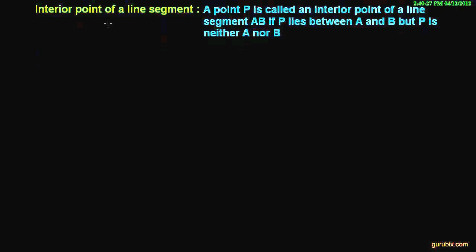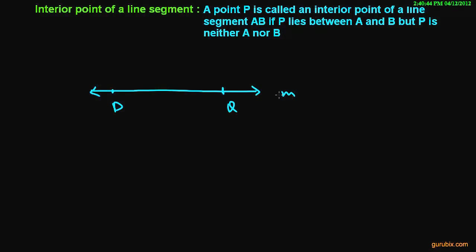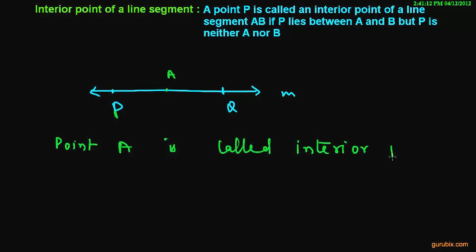Now we shall move to the next topic: interior point of a line segment. Suppose we have a line segment P, Q on a line M, and there is a point A which is in between P and Q but not P and Q. So this point A is called the interior point of line segment P, Q.